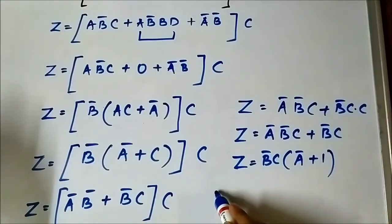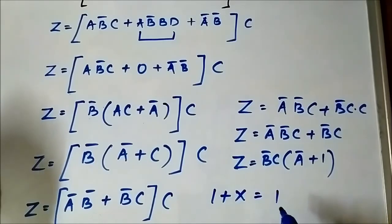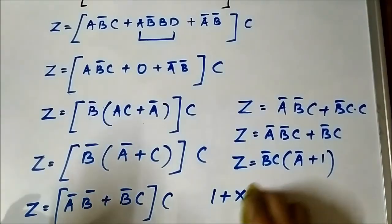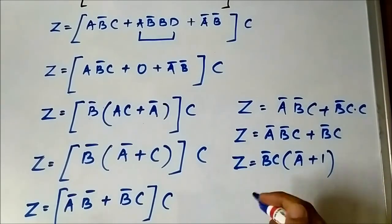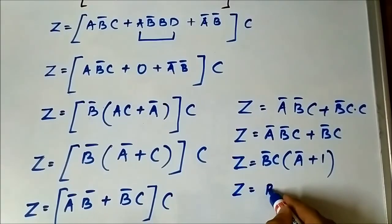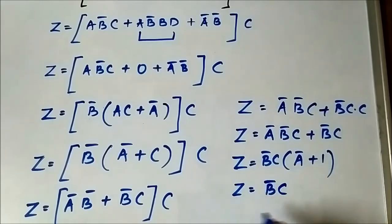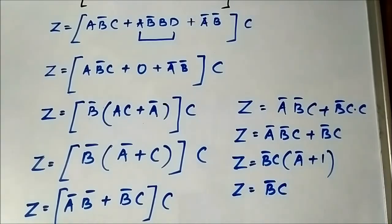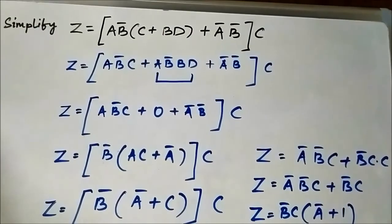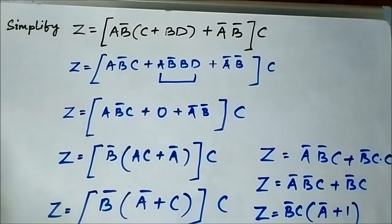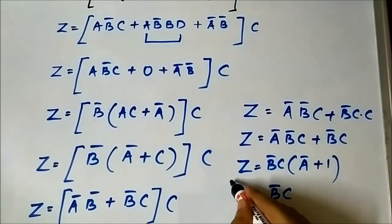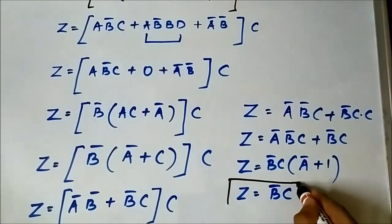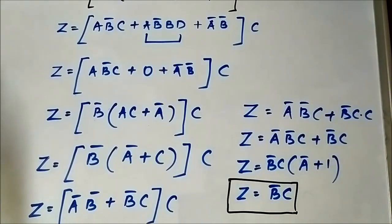So z equals b̄c. This is the final Boolean simplified expression. We have reduced the original Boolean expression into this simplified form: z equals b̄c. This is the final simplified Boolean expression.